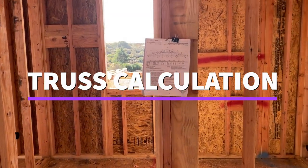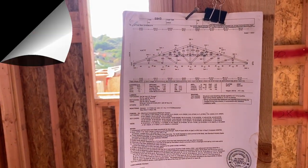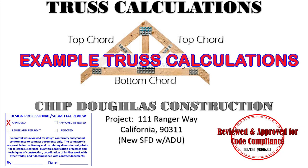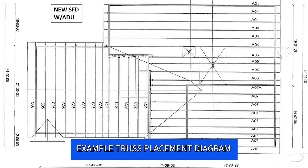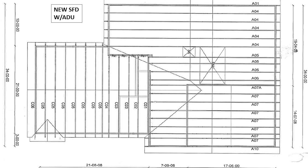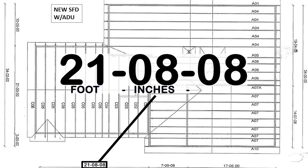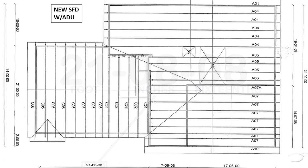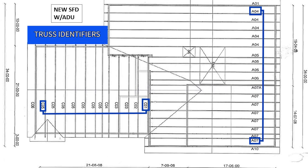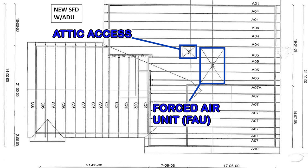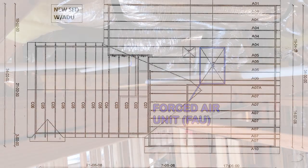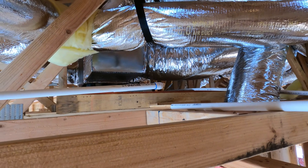Let us now review an example truss calculation for this inspection. Every truss calculation packet comes with a cover sheet. Also included is a truss placement diagram identical to a roof plan. On this example diagram, you'll see dimensions which are typically shown in feet, inches, and sixteenths. The truss identifiers are also shown here, which are a letter followed by a number. The diagram also shows the location of the attic access and the location of the forced air unit. This is very important information since trusses supporting the mechanical unit would typically be special trusses designed to carry such loads.